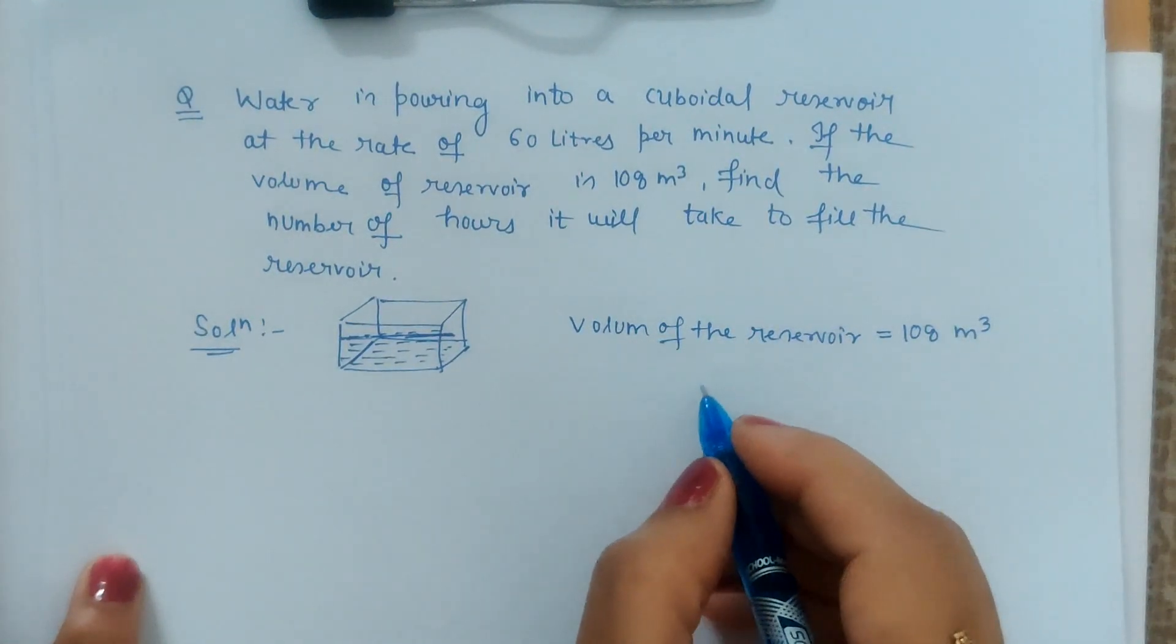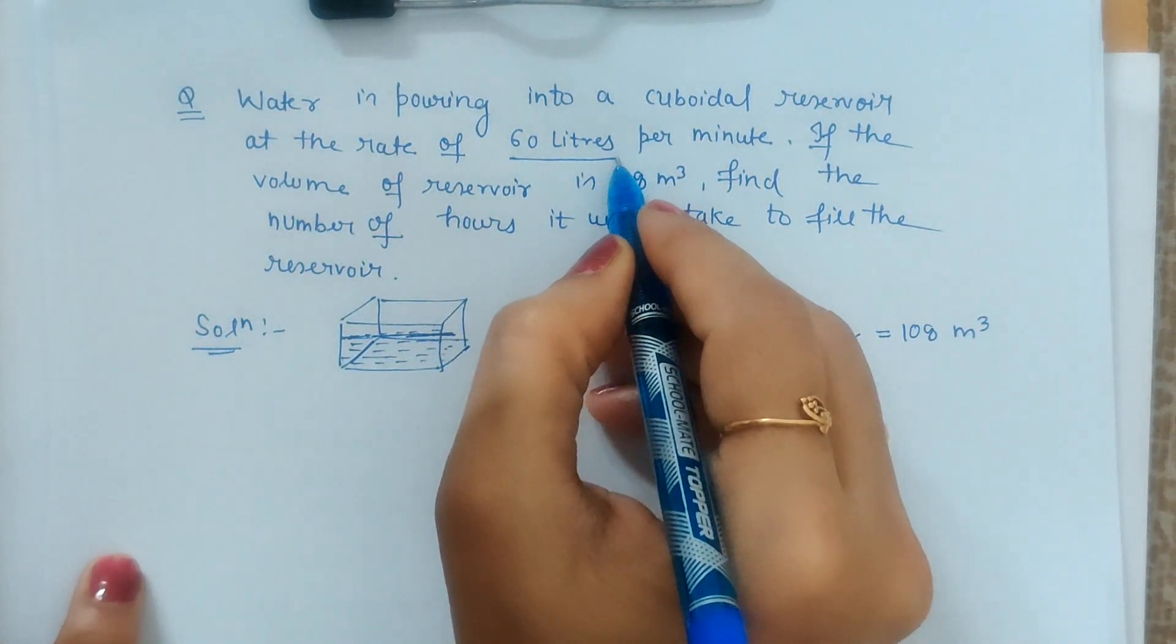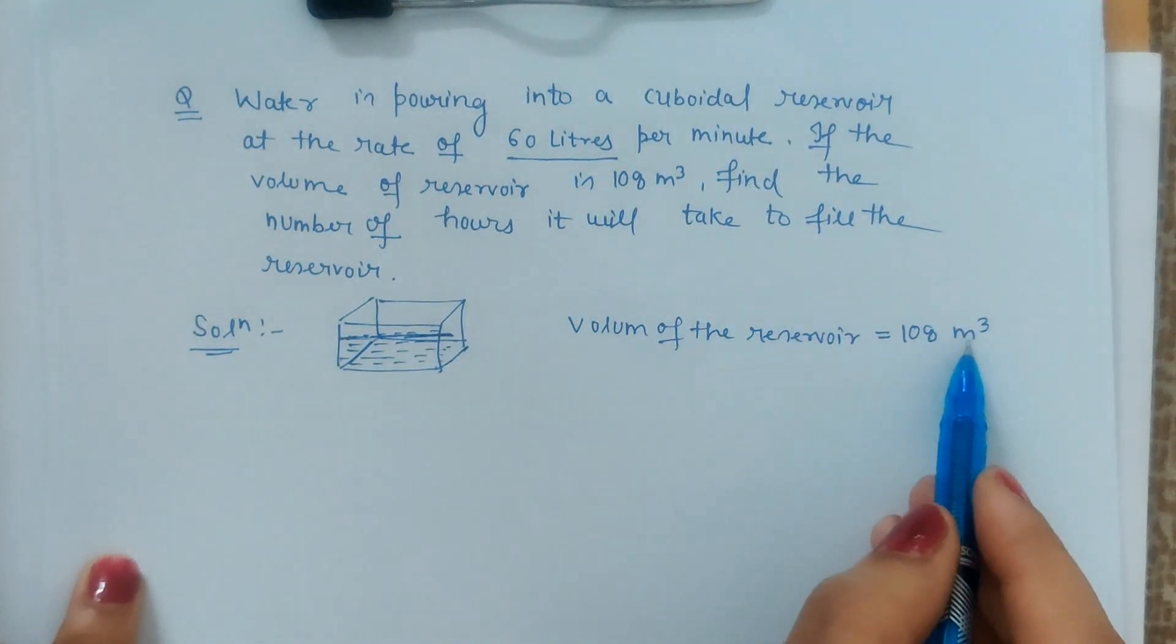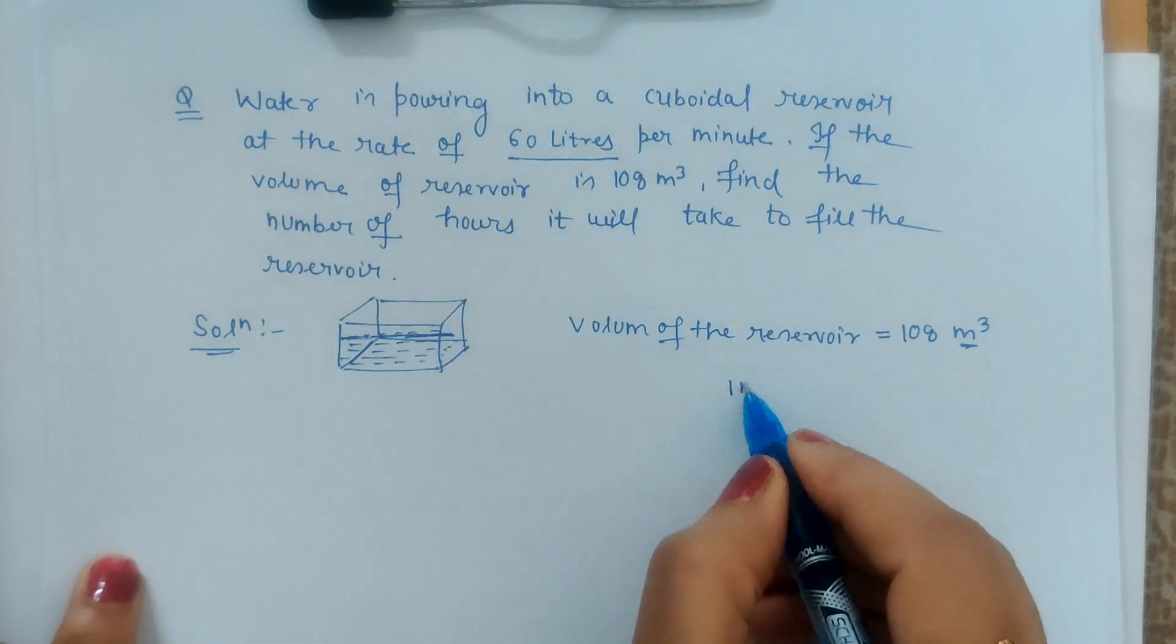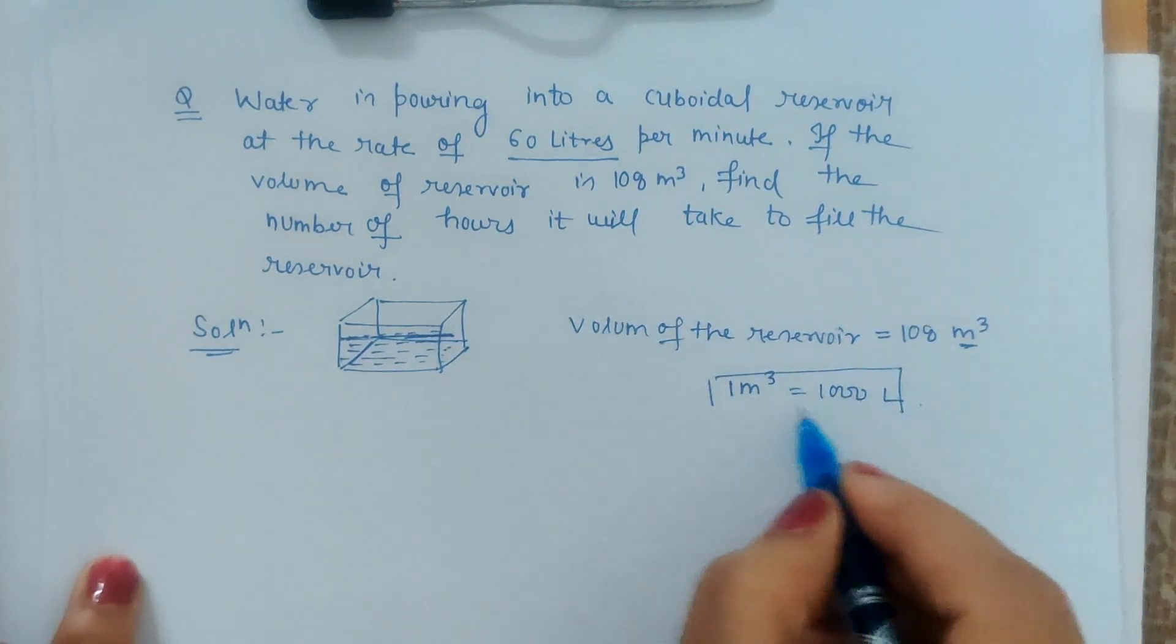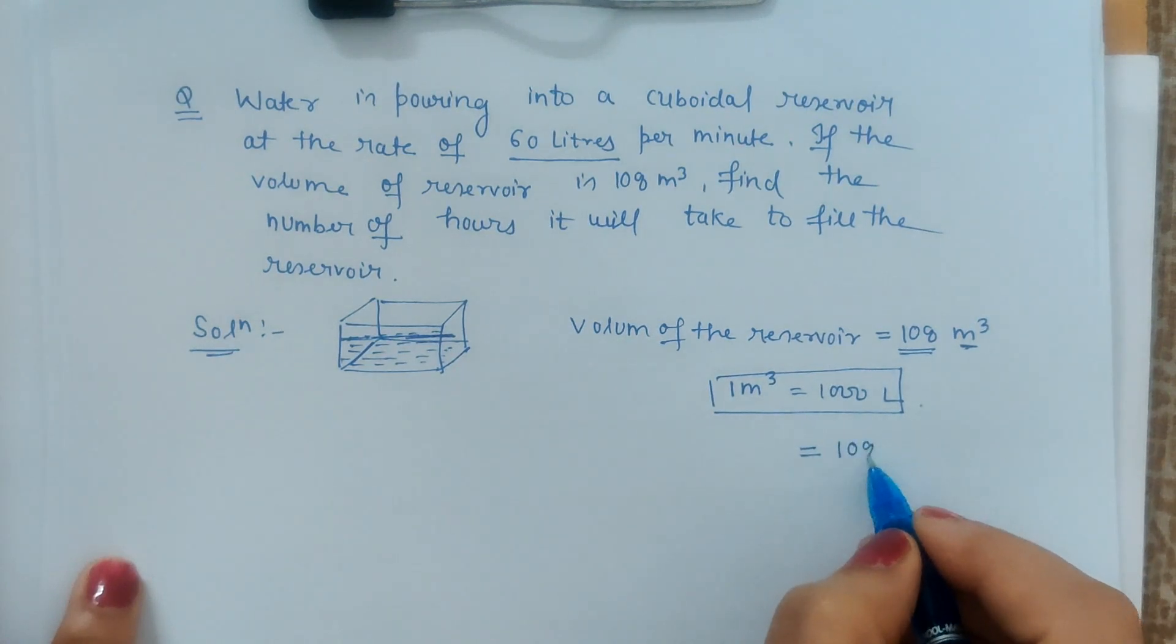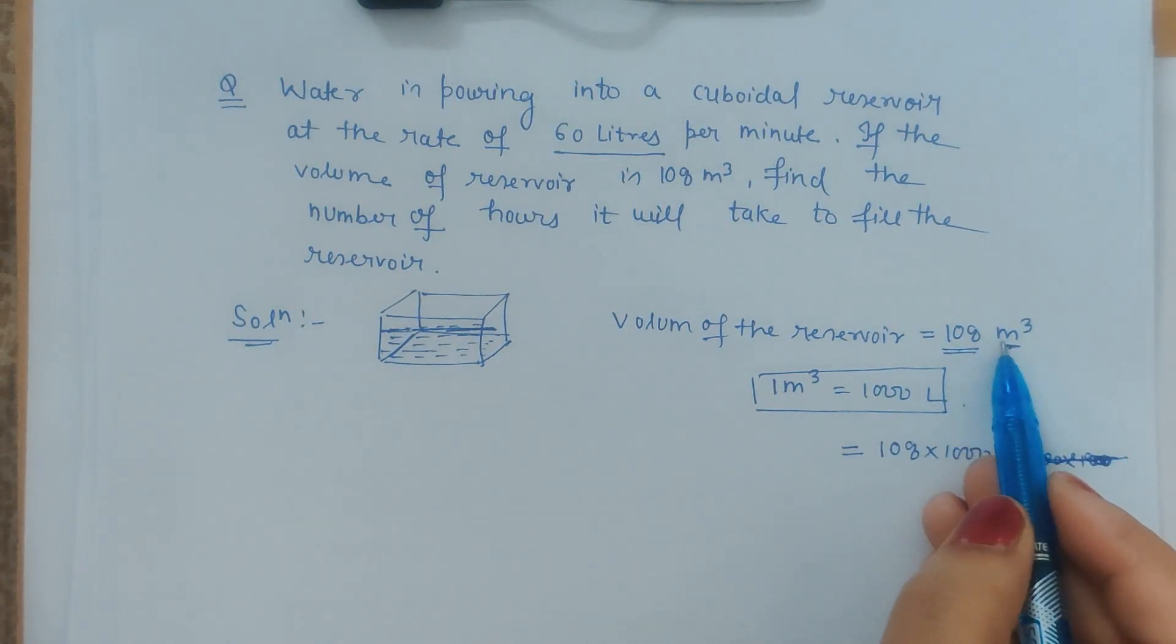In one minute the portion of the reservoir that will be filled is 60 liters. We have to convert the volume in terms of the same unit. We know one meter cube is thousand liters. For converting this to liters, we will have to multiply it by thousand.